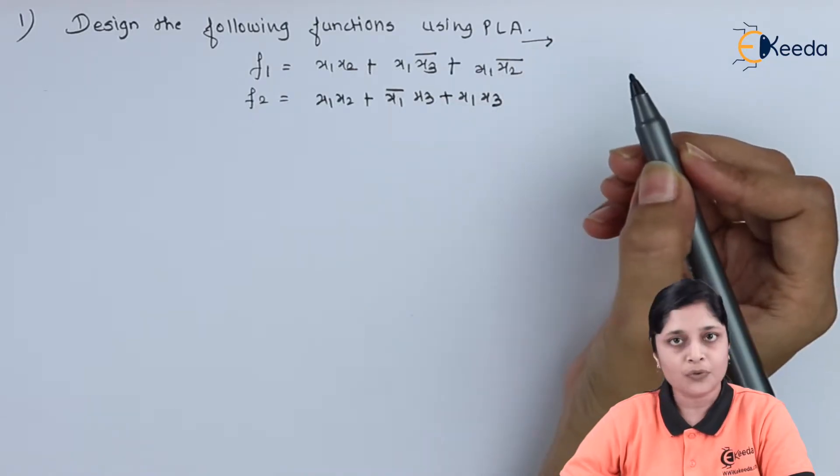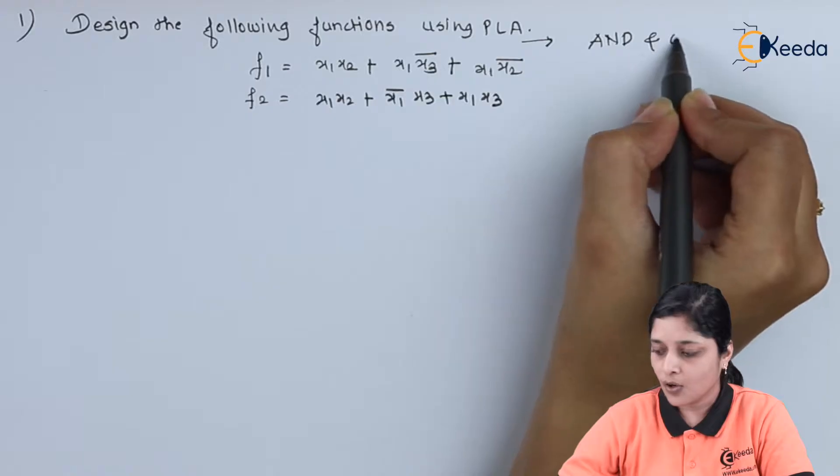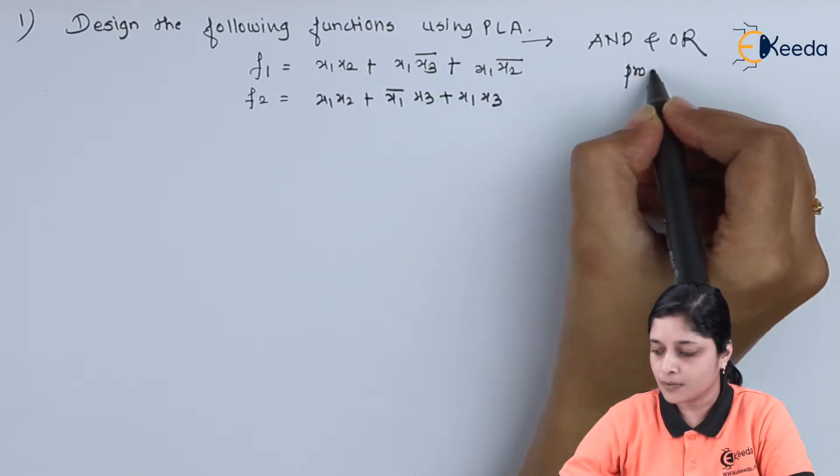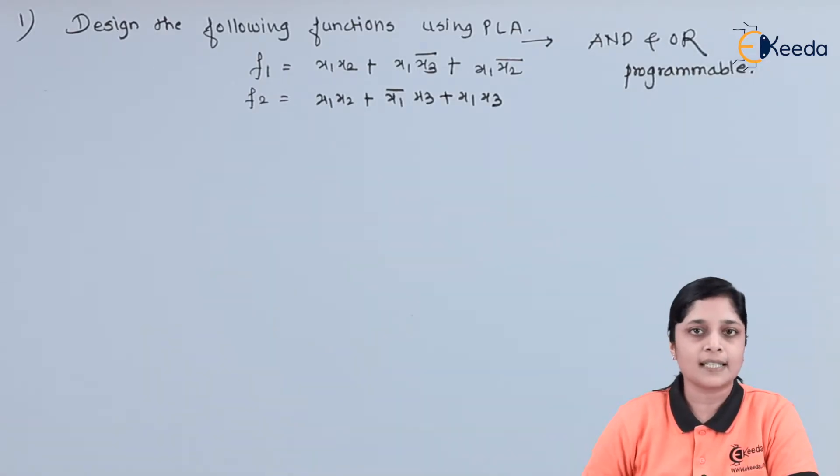The most important point you have to remember here is AND gate and OR gate, both gates are programmable. With the use of this concept, you can design the circuit for the given functions. Now we will design the circuit.